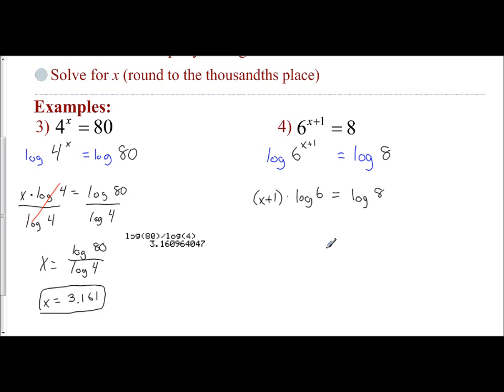So what I'm going to do first is I'm going to divide, just like I did before, by my log. I'm going to divide both sides by log of 6. That's going to isolate my object. And so I get x plus 1 equals log of 8 over log of 6.